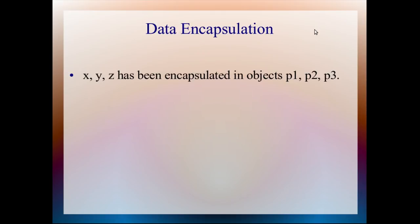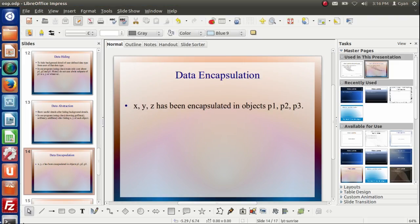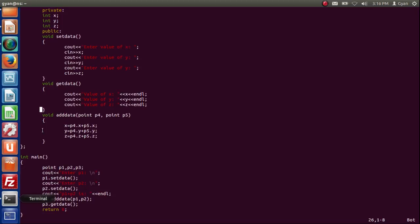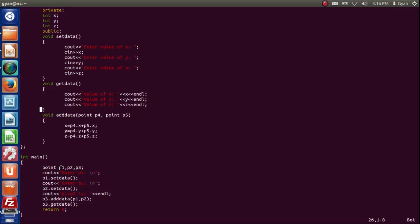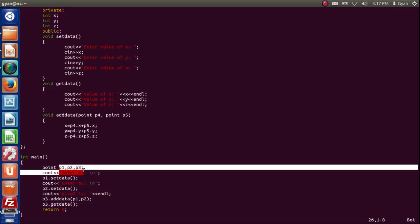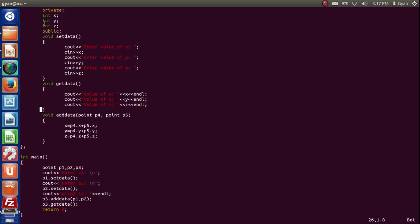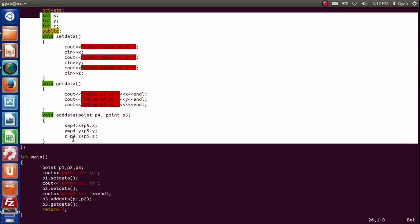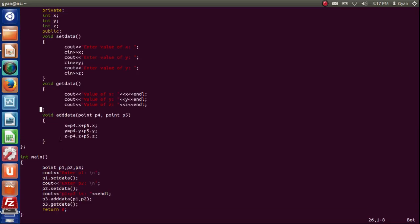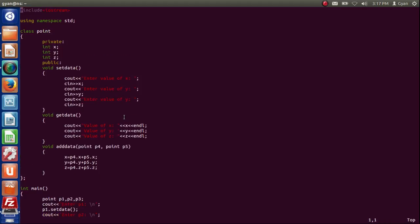All p1, p2, p3 have their different x, y, and z. This is called data encapsulation. Here, see, all these properties of the class, functions and data types have been encapsulated into p1, p2, and p3. This is called data encapsulation.